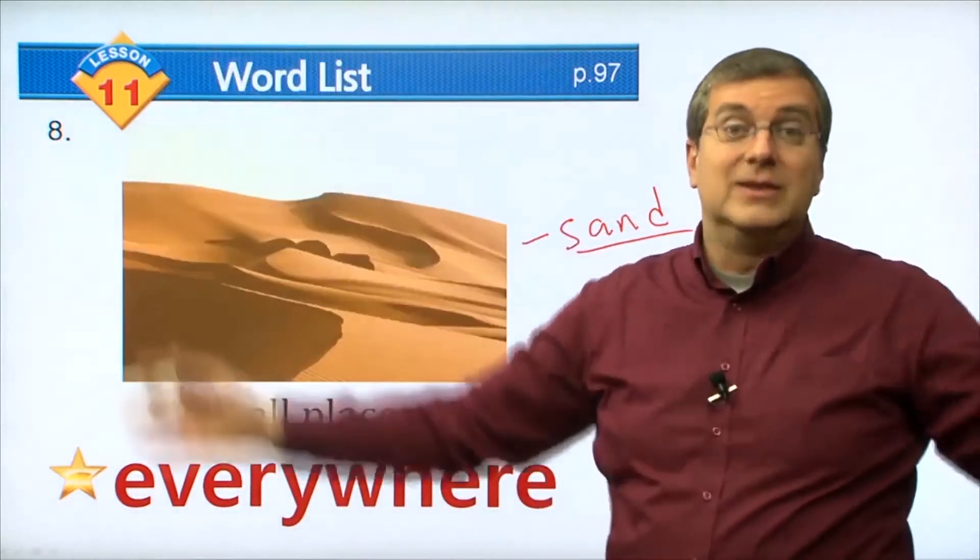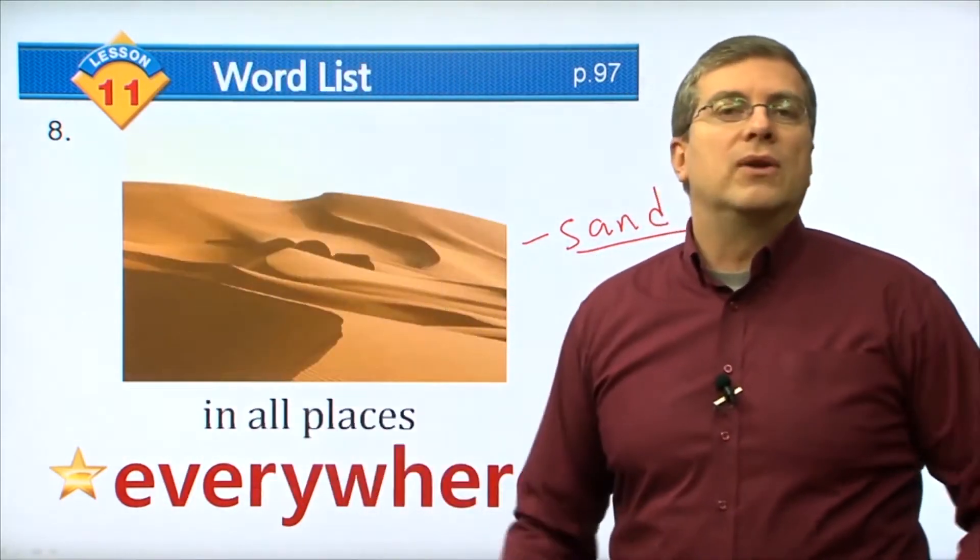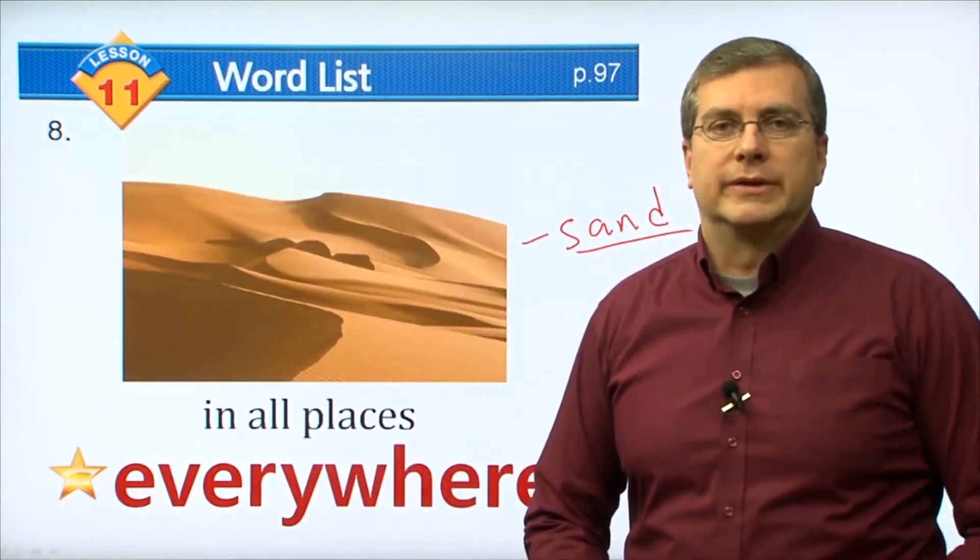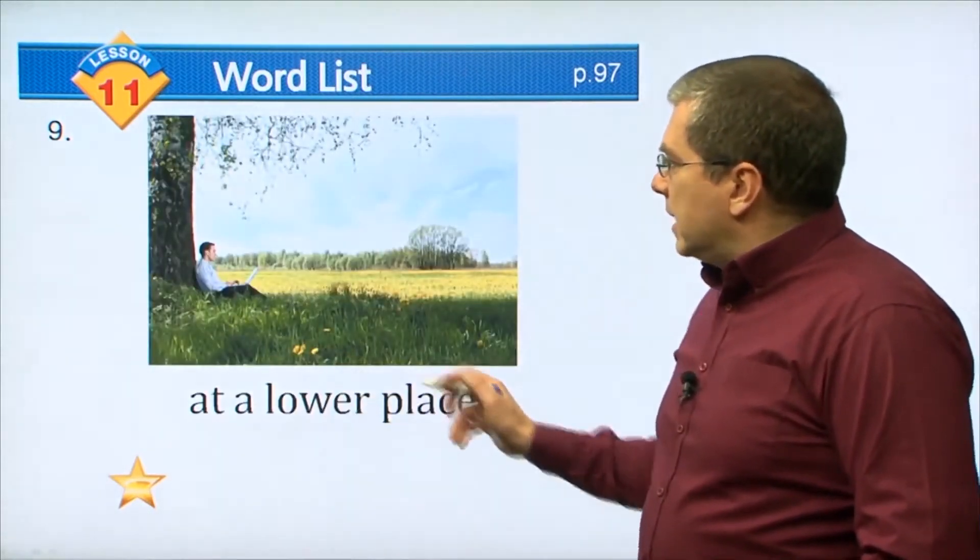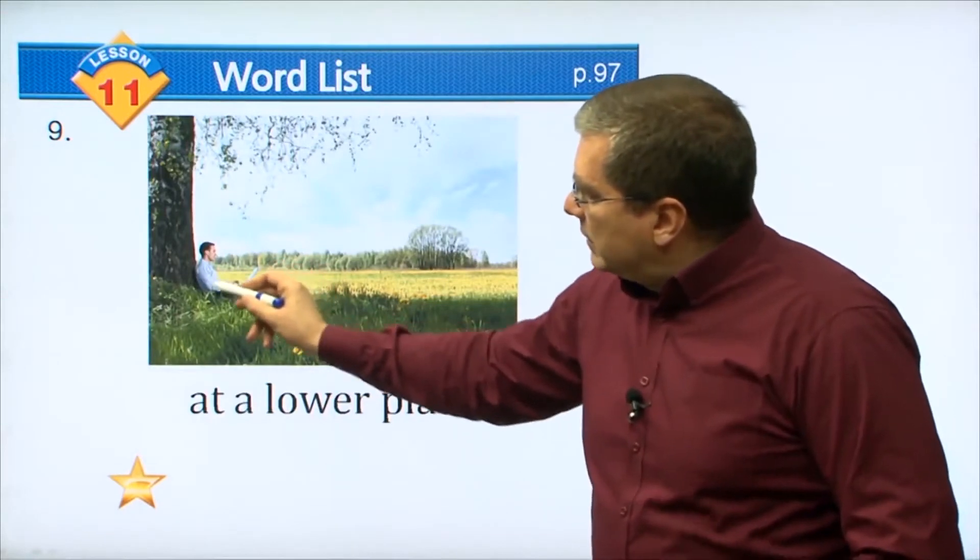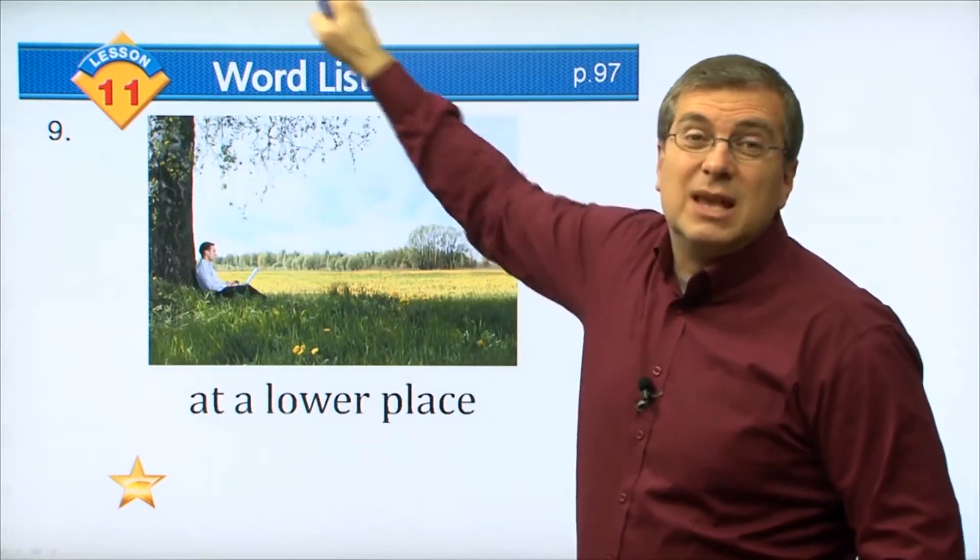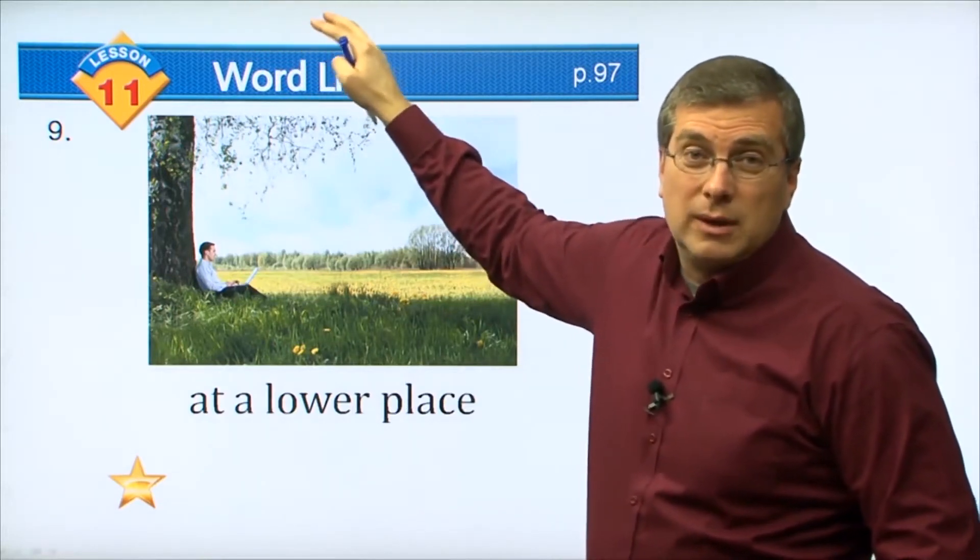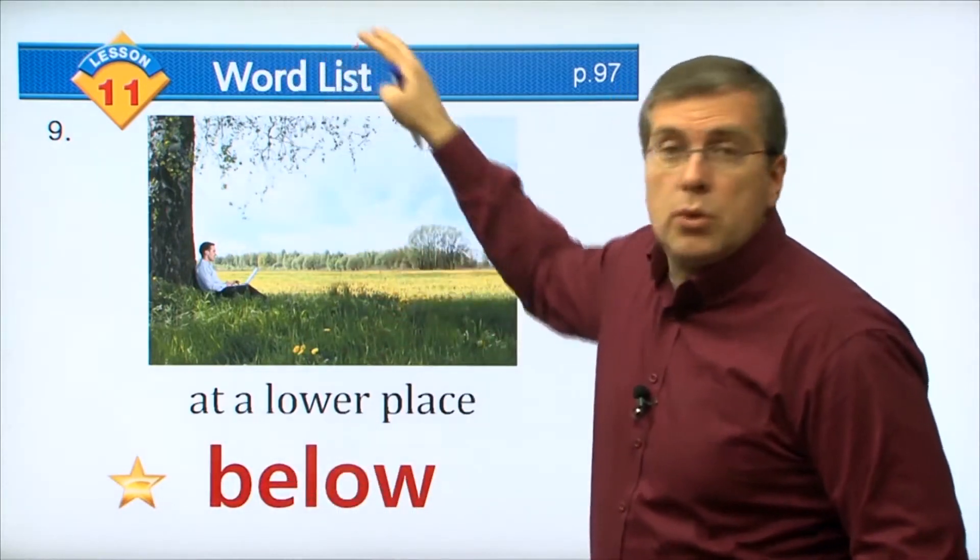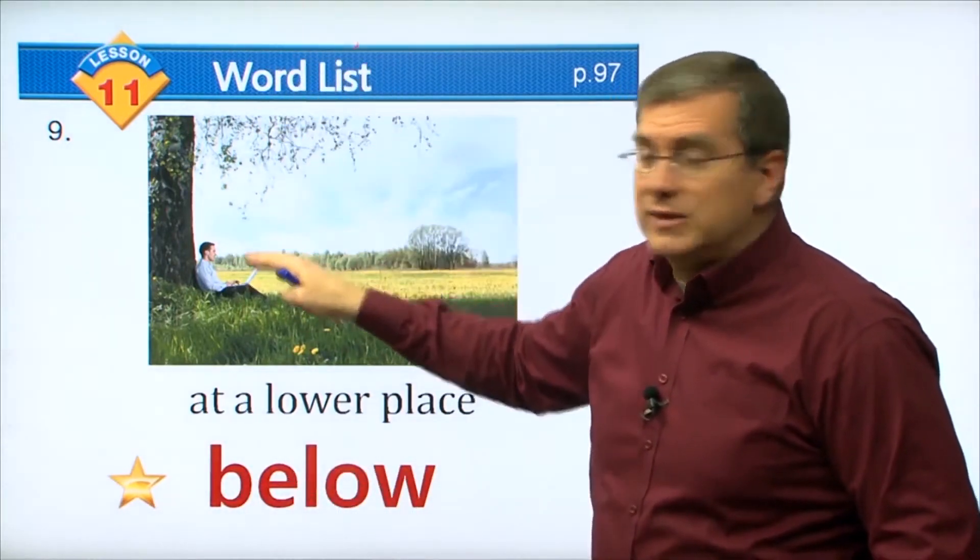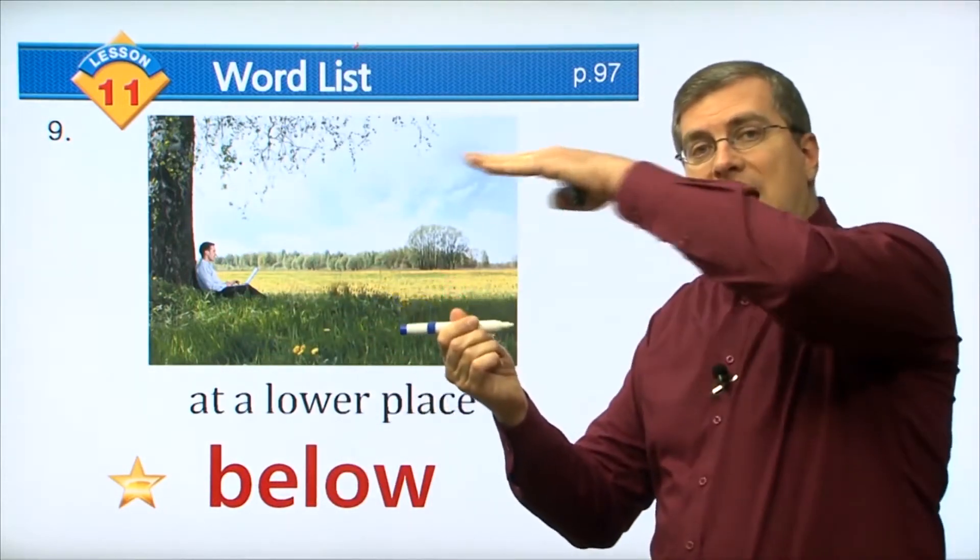Next word, number nine: at a lower place. Here we see a man sitting by a tree. The tree is very tall - the branches and leaves are on top. Where is he? He is below. He's below the branches and leaves. So here is a pen, here is my hand - the pen is below my hand. Below: at a lower place.